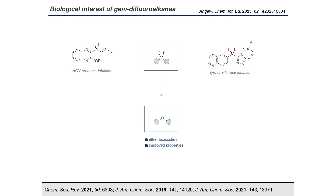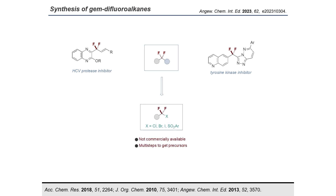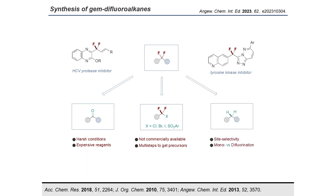Traditionally, gem-difluoromethylene could be synthesized from precursors such as gem-difluoromethylene sulfones. However, these precursors are normally not commercially available, and sometimes require multi-steps to synthesize. Alternatively, gem-difluoromethylene could be synthesized through the difluorination of ketones. However, this methodology is limited by its harsh conditions and expensive reagents. Another way is the direct difluoromethylation of sp3 C-H bonds, but this suffers from selectivity issues, such as site selectivity and mono- or di-difluorination selectivity.